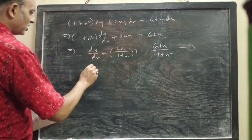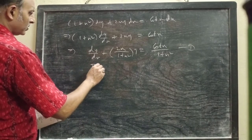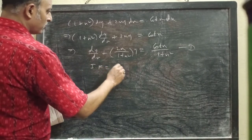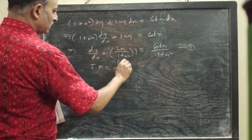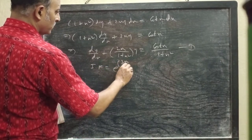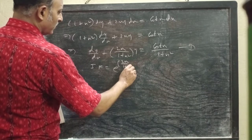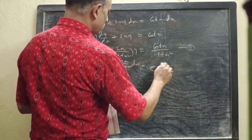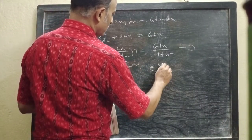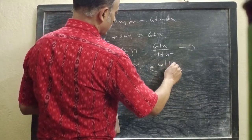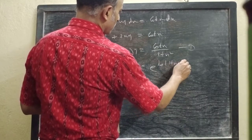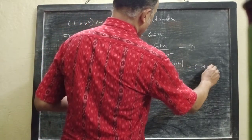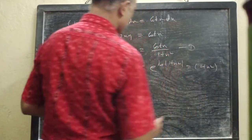Now the integrating factor is e to the power of the integral of 2x/(1 + x²) dx. This will be e to the power of ln|1 + x²|, that is ultimately (1 + x²).